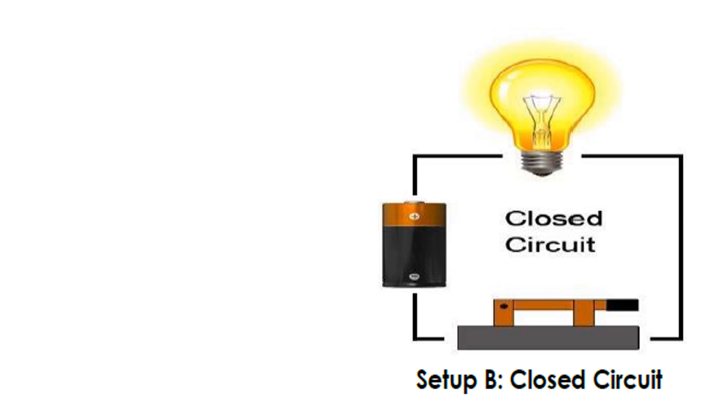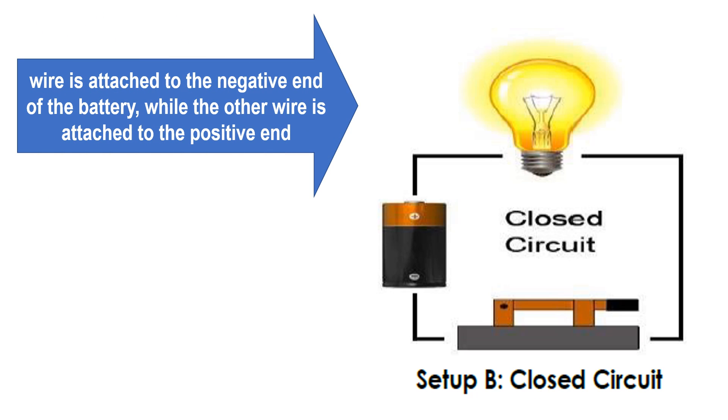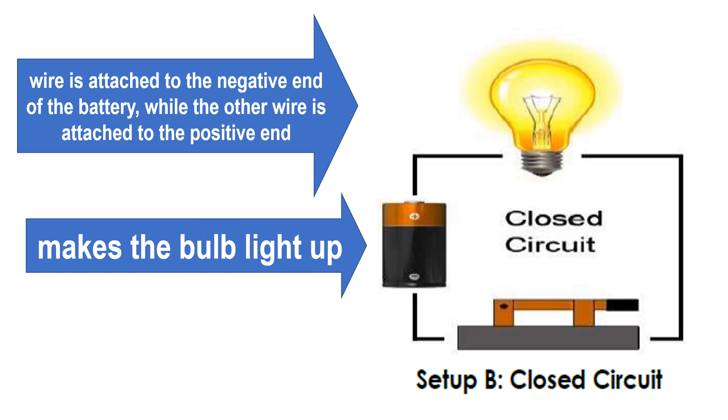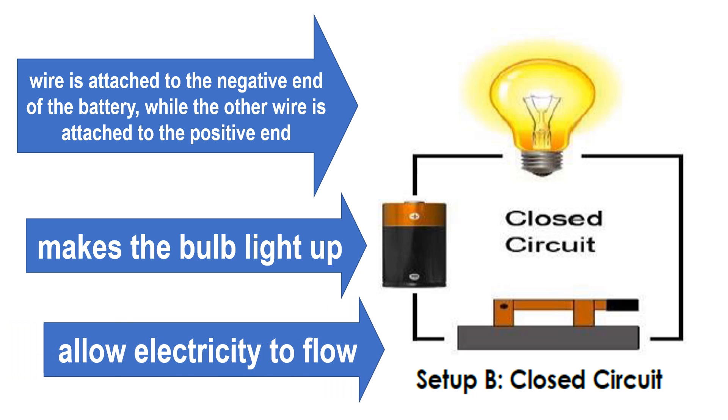In this setup, a wire is attached to the negative end of the battery, while the other wire is attached to the positive end. Both wires are attached to the bulb. Such a circuit is called a closed circuit. A closed circuit makes the bulb light up because the path of electricity is complete, allowing electricity to flow through it.